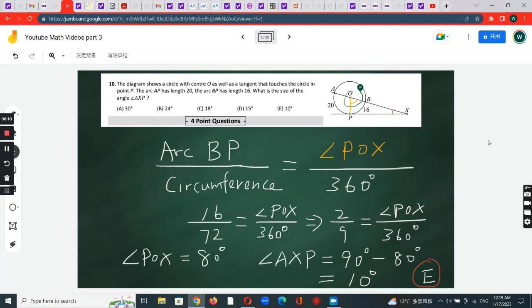To calculate this angle, angle AXP equals 90 degrees minus 80, which is 10 degrees. The sum of these two is 90 because BP is a tangent, so this is a right angle. Therefore, the sum of the other two is 90, and E is the answer.